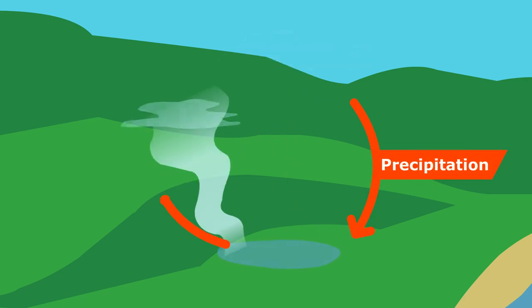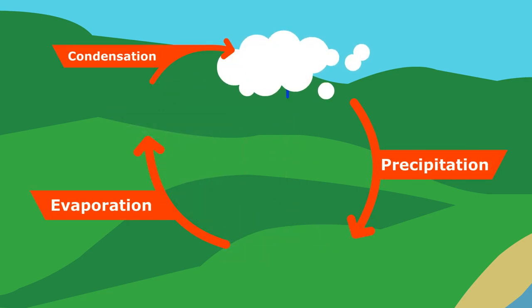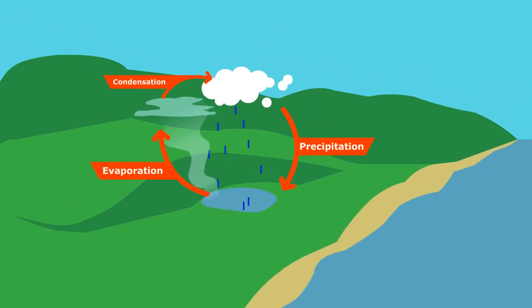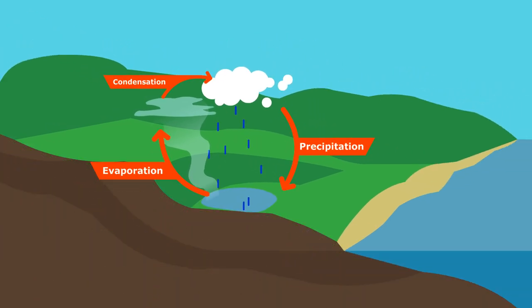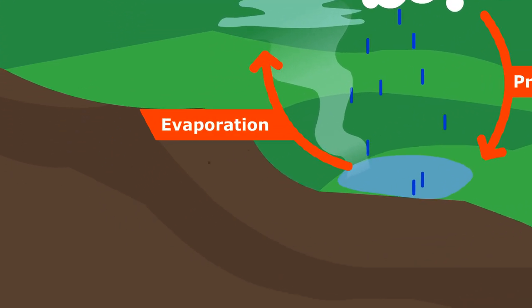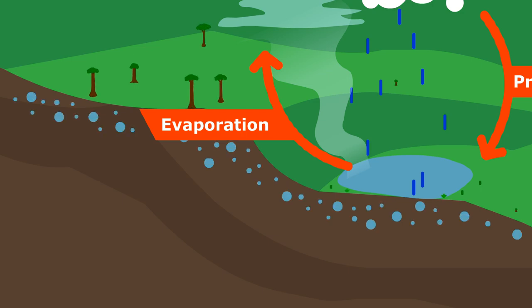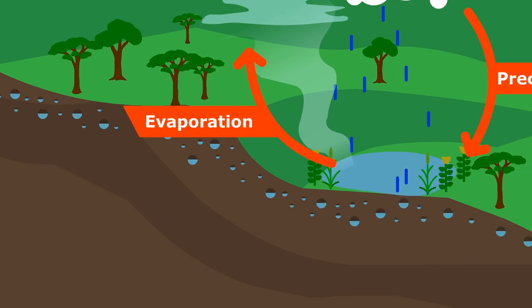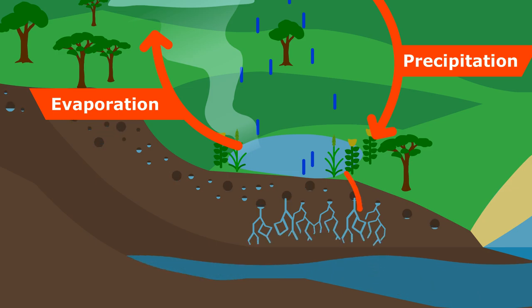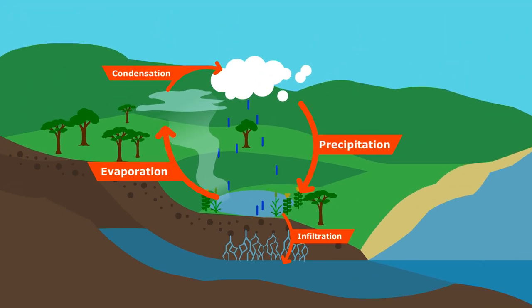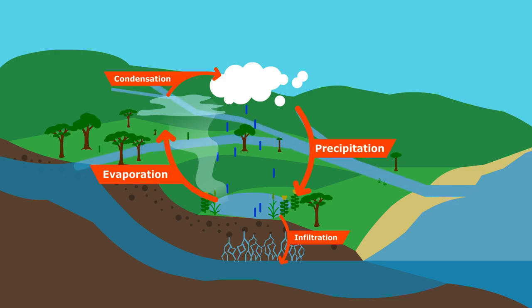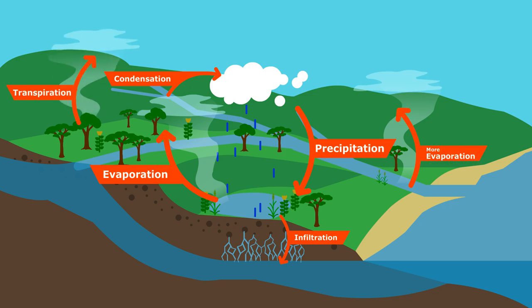We tend to think of the water cycle this way: rain falls, water evaporates, condenses into clouds, and repeats. But this is only part of the picture, since a lot more happens underground. Healthy soil is like a sponge that soaks up a lot of water. Some of it is taken up and stored by plants, and some of it percolates deep down into aquifers. This groundwater wells up and feeds springs and streams, which allows even more life to thrive. There is then much more water to evaporate from the saturated ground, or to transpire through plants. This abundance of water vapor allows for more consistent rainfall.